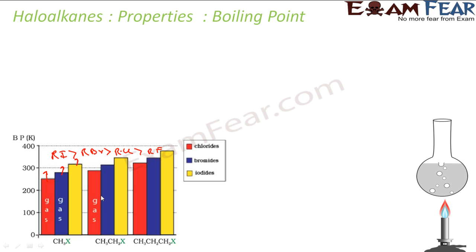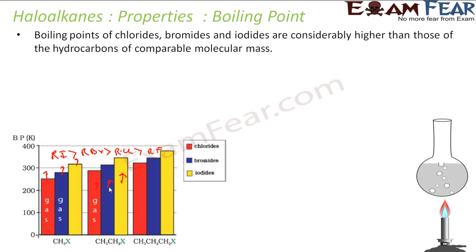Similarly for ethyl halides: C2H5I has the highest boiling point, then C2H5Br, then C2H5Cl — ethyl chloride is actually a gas. As you increase the mass and size, you increase the van der Waals force of attraction, and thus the boiling point. Also, the boiling points of chlorides and bromides are higher than those of hydrocarbons with a similar molecular mass.